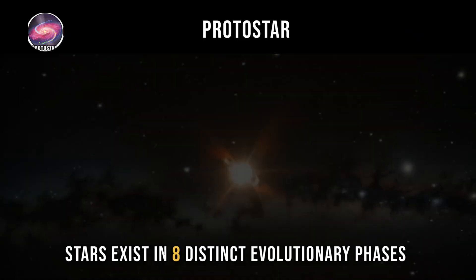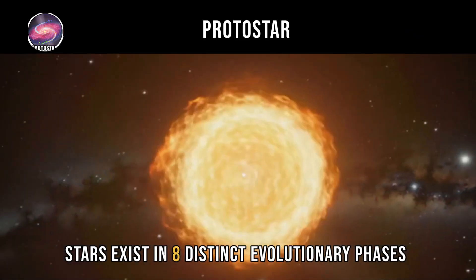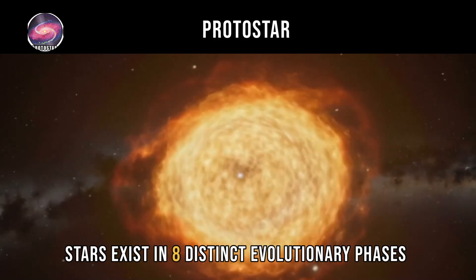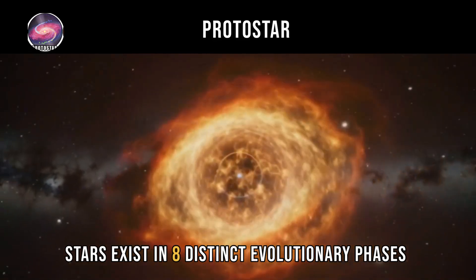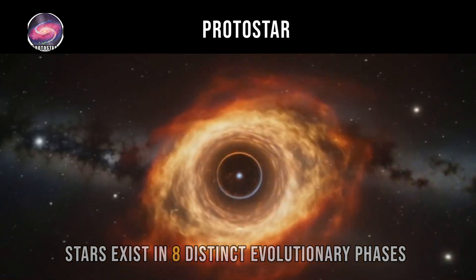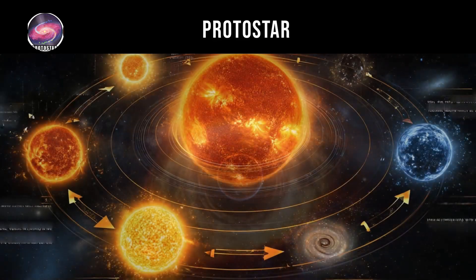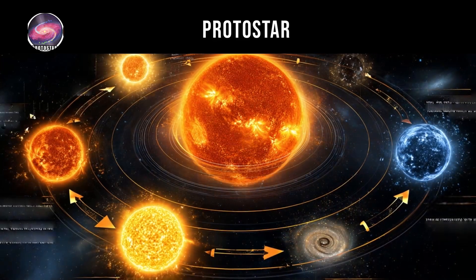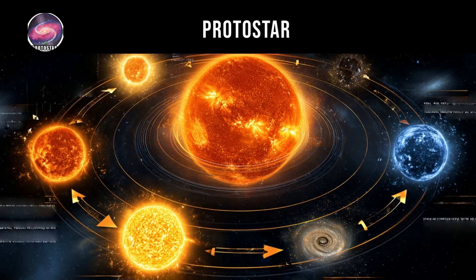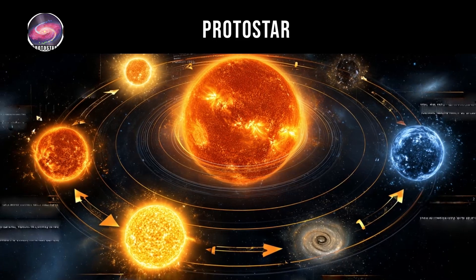Protostar. Stars exist in eight distinct evolutionary phases, each representing a different stage in stellar development or a specific type of stellar remnant.